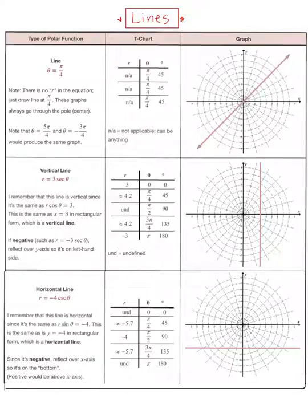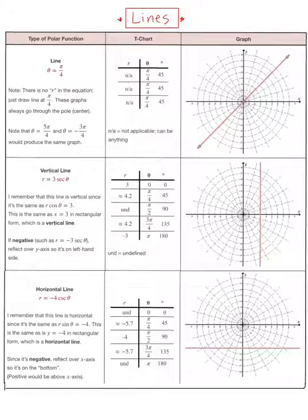Let's go with equations of lines. One form is θ equals π/4, which generates a straight line. Also, you get a vertical line if you have r equals 3 secant θ. Secant θ is 1 over cosine θ, so cross-multiplying gives r cosine θ equals 3, and since r cosine θ is x, you get x equals 3 — a vertical line. For a horizontal line, r equals negative 4 cosecant θ: cosecant is 1 over sine, so r sine θ equals negative 4, meaning y equals negative 4.